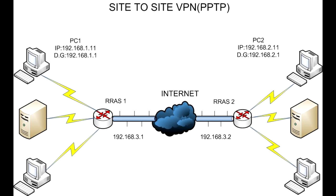Number 3: Point-to-Point Tunneling Protocol, PPTP. PPTP creates a tunnel and encapsulates the data packet. It uses a Point-to-Point Protocol, PPP, to encrypt the data between the connection. PPTP is one of the most widely used VPN protocols and has been in use since the time of Windows 95. Apart from Windows, PPTP is also supported on Mac and Linux.